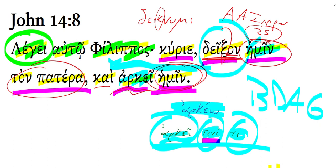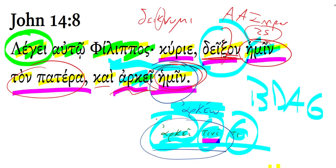One reference I looked at classified this as a dative of advantage: 'it is enough for us, it is sufficient for us.' I think you could also just call it a dative complement, in the sense that it's filling out the verb, completing the verbal idea here, and we need a dative there to complement or complete the verbal idea.